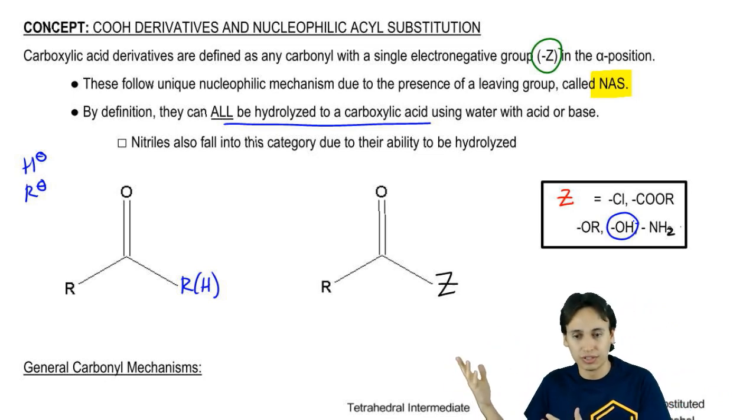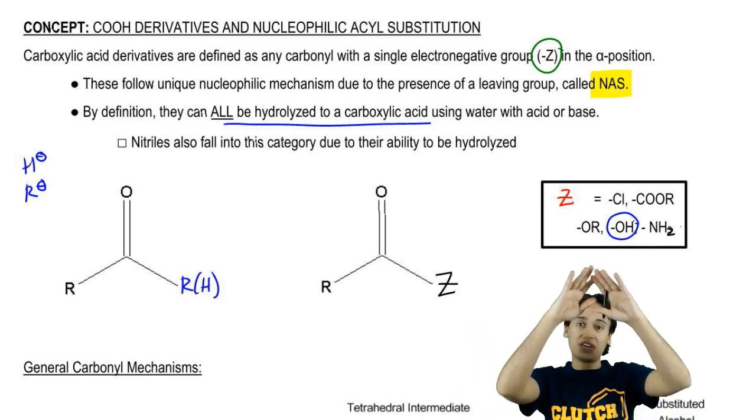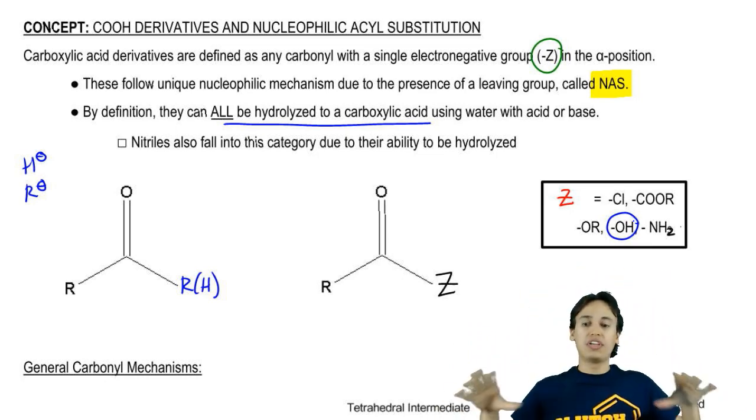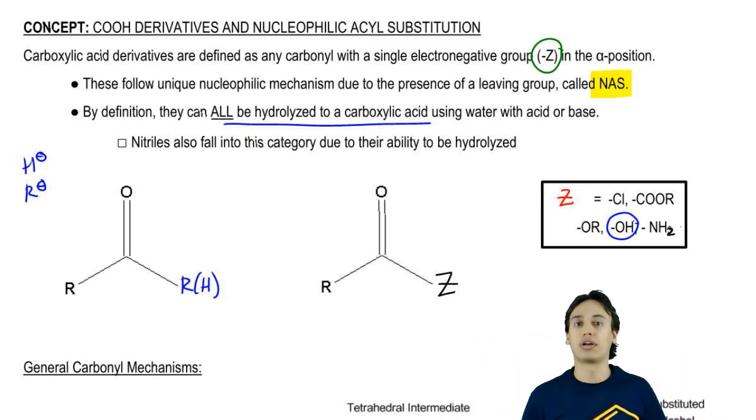Carboxylic acid is also a Z group. It's a specific one. Carboxylic acid you could think of as the mother of all of the other carboxylic acid derivatives because you can always turn those derivatives back into carboxylic acid with hydrolysis.